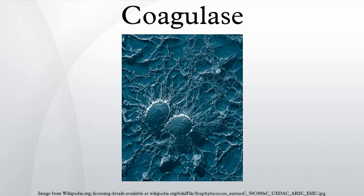Coagulase is tightly bound to the surface of the bacteria S. aureus and can coat its surface with fibrin upon contact with blood. The fibrin clot may protect the bacterium from phagocytosis and isolate it from other defenses of the host. It has been proposed that fibrin-coated Staphylococci resist phagocytosis, making the bacteria more virulent.